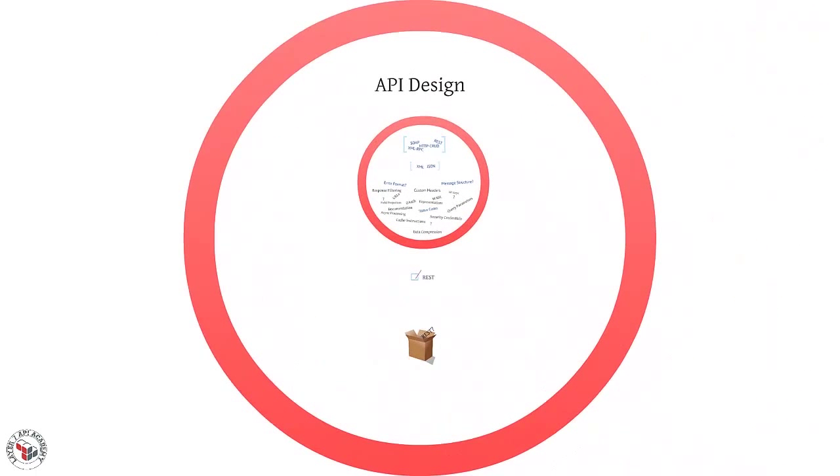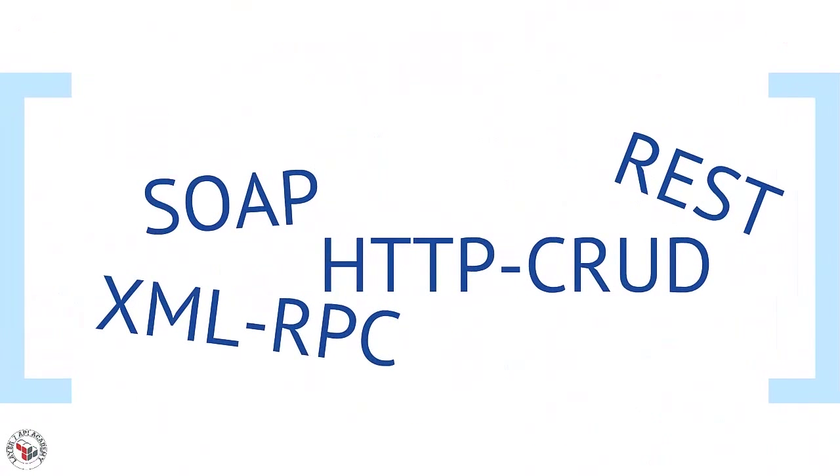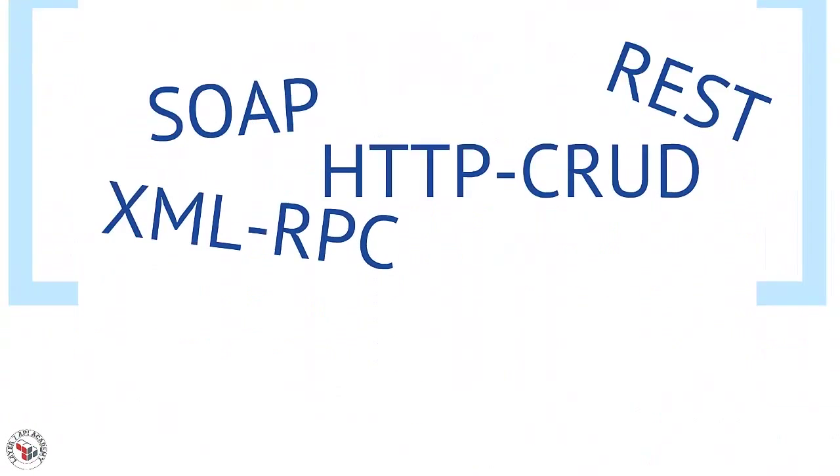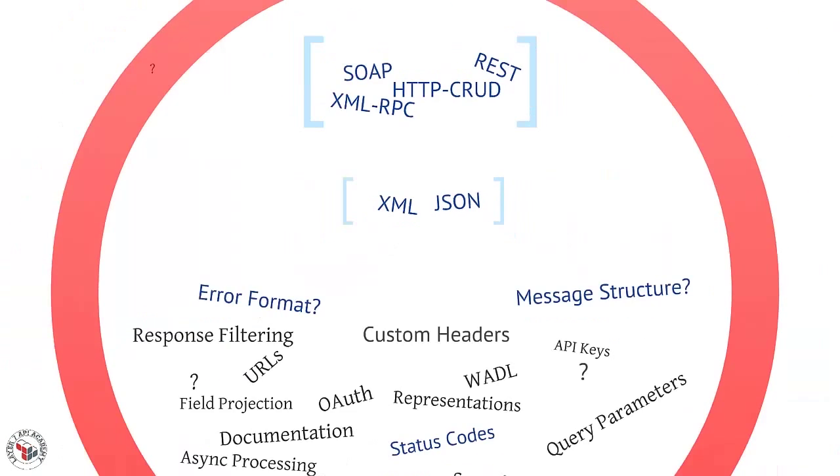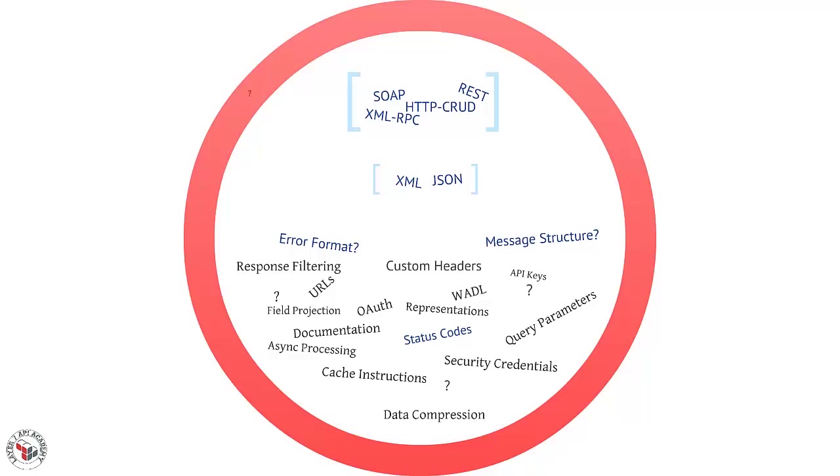We know that when you're designing an API, you have a lot of decisions to make. Things like the architectural style, whether it's going to be REST or SOAP, message formats like XML or JSON, and a lot of other smaller decisions like error formats, message patterns, status codes. All of these things are important.